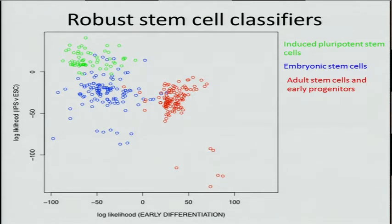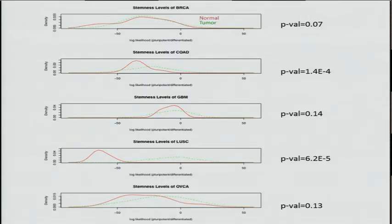That signal may also play out in cancer. The x-axis is the one we're concerned with — the one that is embryonic stem cell specific. We applied that learner to each of the expression data sets from the TCGA so far: breast cancer, colorectal cancer, glioblastoma, lung cancer, and ovarian cancer. We can see there is a shift in the mean expression of the embryonic stem cell signature in all of these.